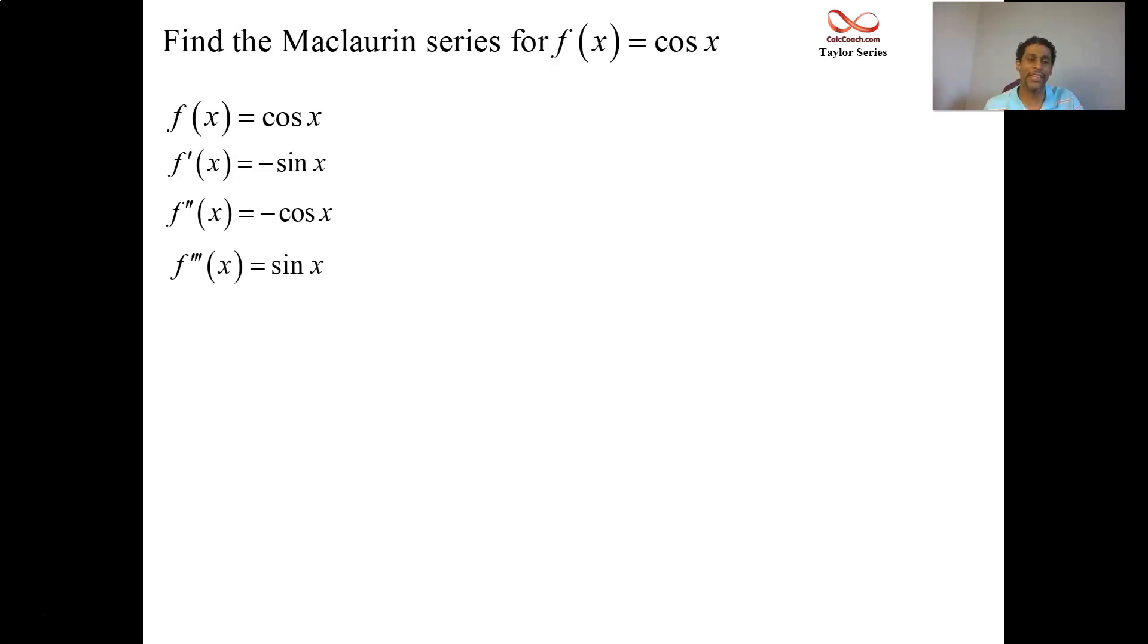All right, so let's go ahead and get started. We have cosine x, and the process is, in the first column, to take a bunch of derivatives until we can find a pattern. So generally, five is good. So cosine's derivative is negative sine, and negative sine's derivative is negative cosine. Negative cosine's derivative, positive sine of x. And then sine x's derivative is cosine. And we're back to where we started at. If we take the next one, it'll be negative sine x.